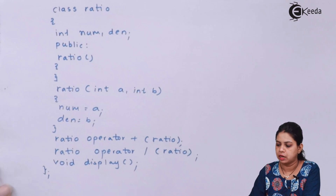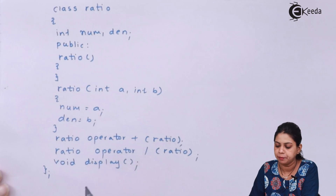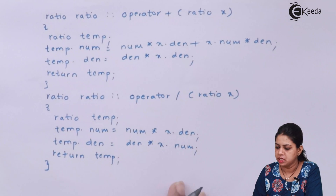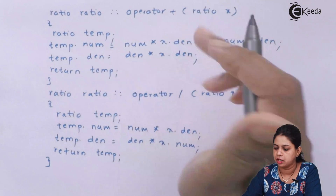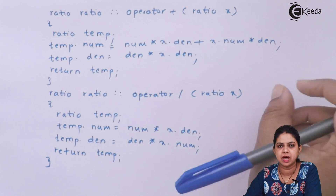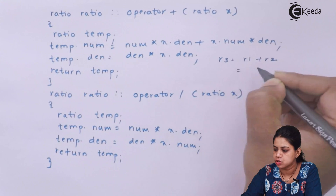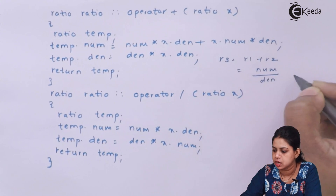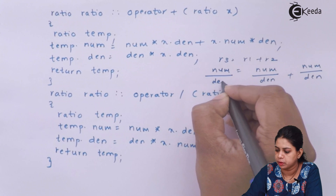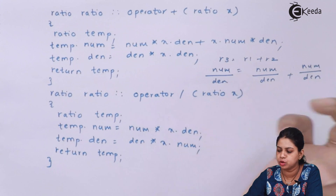Here is one more example: performing addition and division of two ratios. I have declared two variables — numerator x and denominator y. I am overloading two operators: the plus operator and the division operator. My r1 and r2 are ratios (numerator/denominator), and the addition r1 + r2 will be stored in r3. So r3 = r1 + r2.